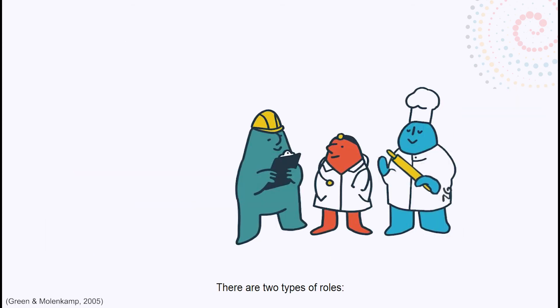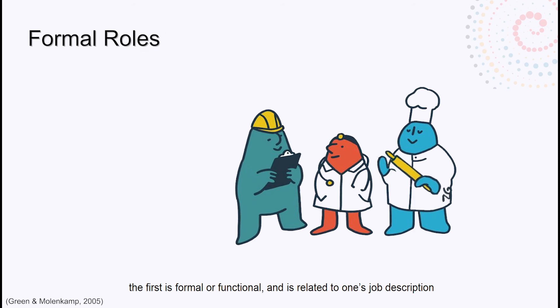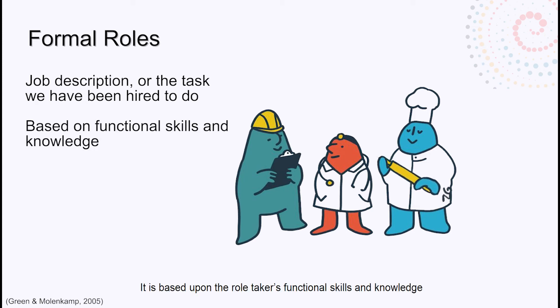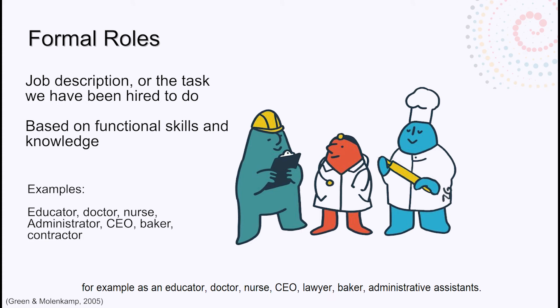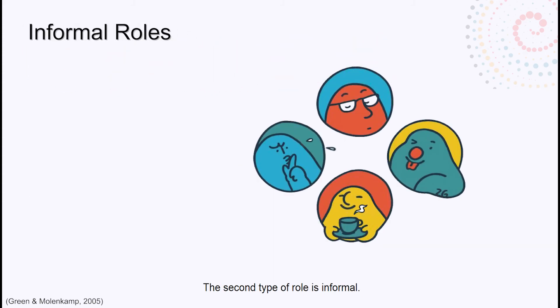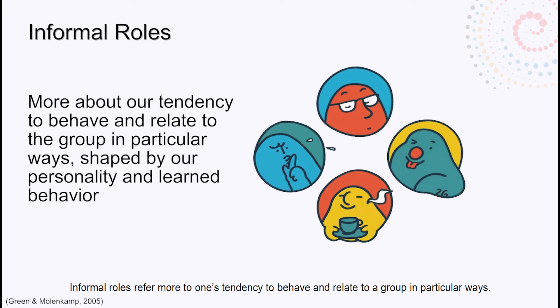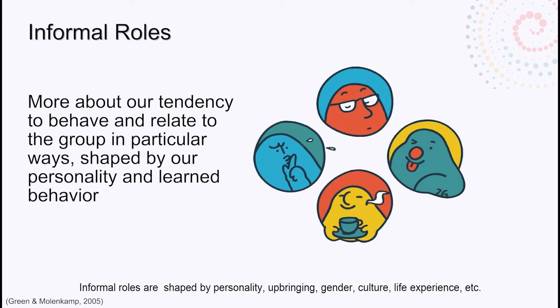There are two types of roles. The first is formal or functional, related to one's job description or the task they've been hired to do — it is based upon the role-taker's functional skills and knowledge, for example as an educator, a doctor, a nurse, a teacher, etc. The second type of role is informal. Informal roles refer more to one's tendency to behave and relate to a group in particular ways, and are shaped by personality, upbringing, gender, culture, life experience, etc.